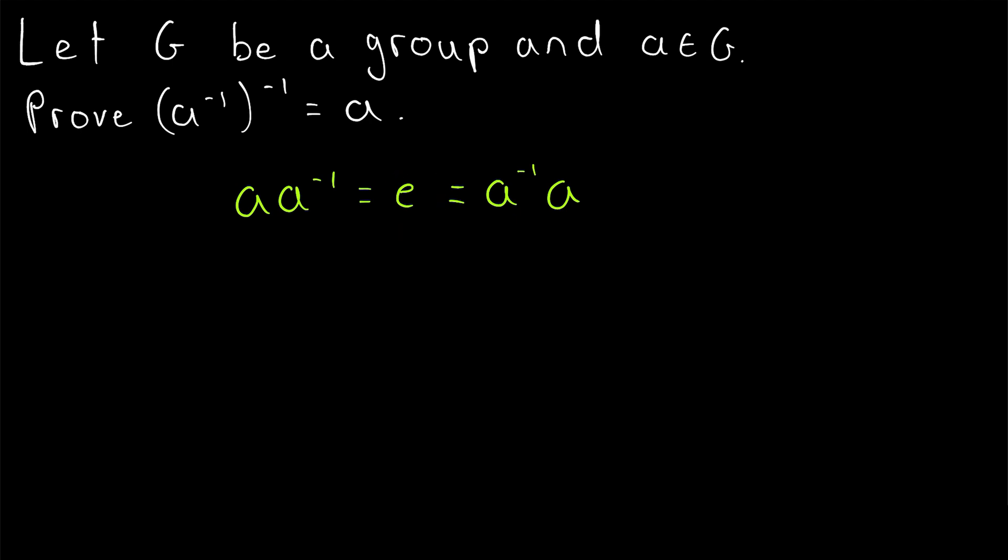since combining A with A inverse in any order produces the identity, we have that A must be equal to the inverse of A inverse. So the inverses kind of just cancel out and leave the original element A unchanged.